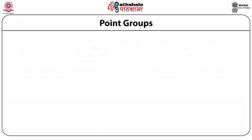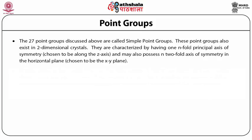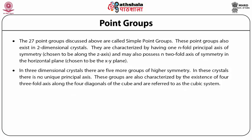The groups discussed so far — Cₙ, Cₙₕ, Dₙ, Dₙₕ, Dₙd, etc. — total 27 point groups. These point groups also exist in two-dimensional crystals. They are characterized by having one n-fold principal axis of symmetry, conveniently chosen along the z-axis. They may also possess n two-fold axes of symmetry in the horizontal plane, conveniently chosen as the xy-plane, with rotations in the horizontal plane by angle π.